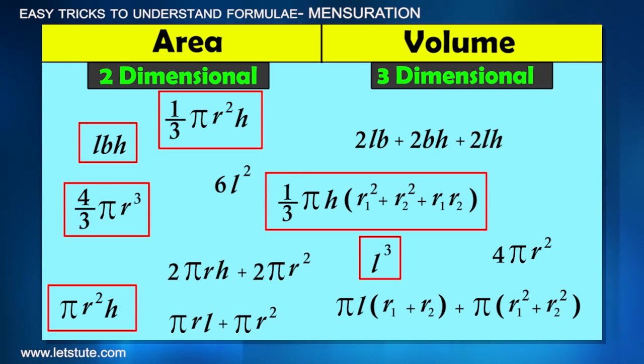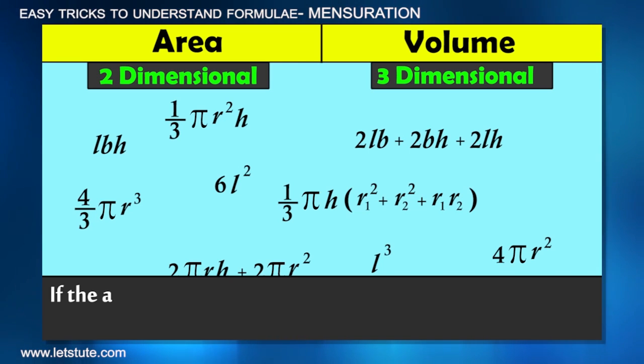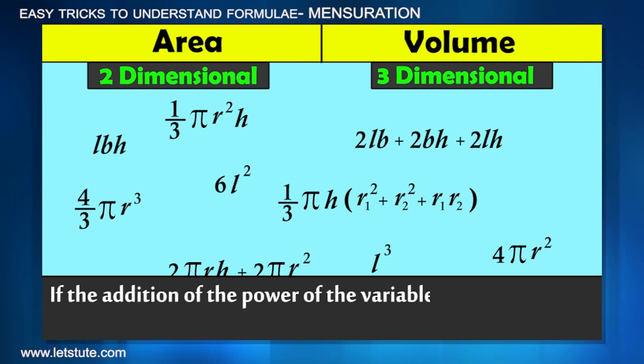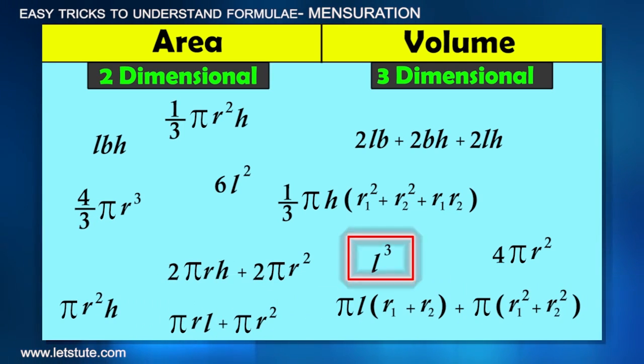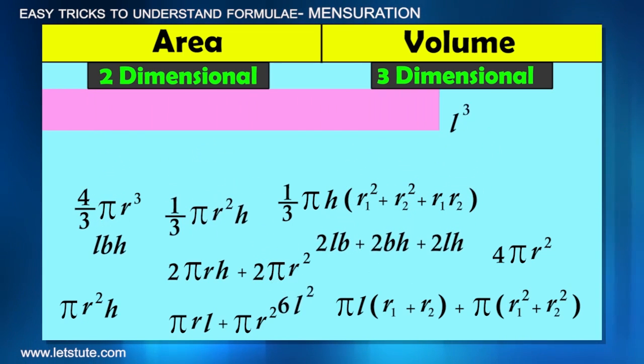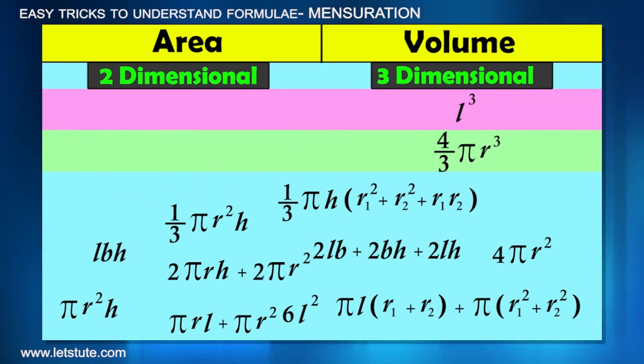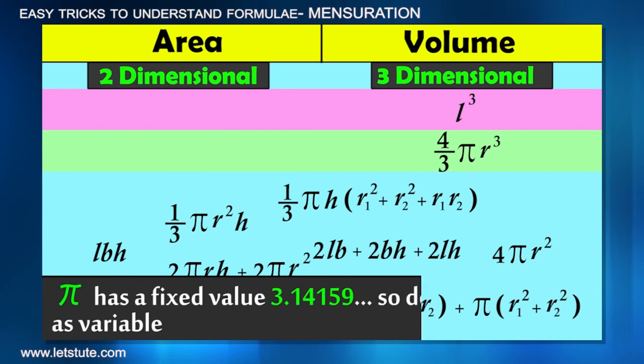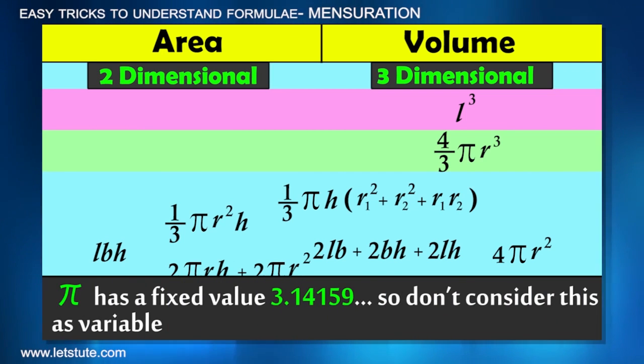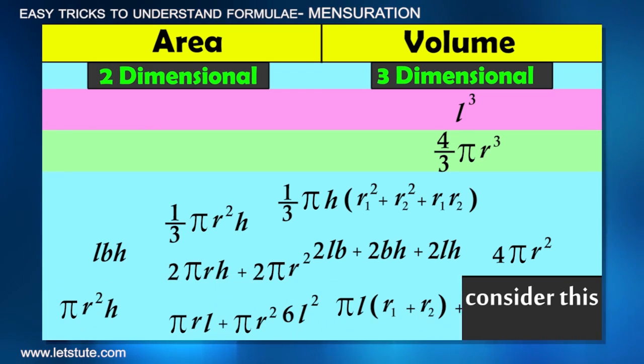These are all the formulas to calculate volume, and if the addition is 2, it means it is the formula to calculate space taken by two-dimensional objects, i.e., area. So L³ is three-dimensional; it is the formula to calculate volume. 4/3πr³ is also three-dimensional; this is also the formula to calculate volume. One thing you must remember is π is not a variable, it is a constant.